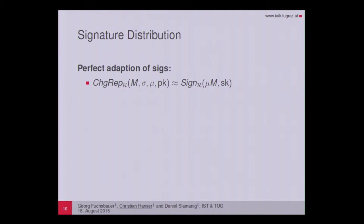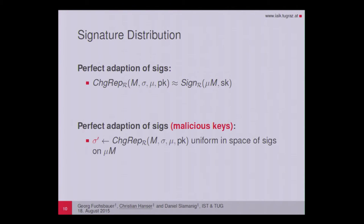We need some properties during this talk for the signature distribution that are stronger than class hiding. The first is perfect adaption of signatures, which demands that an adapted signature has the same distribution as a freshly issued signature. An even stronger notion is perfect adaption under malicious keys, where we require that the signature output by the change-rep algorithm is a uniform element in the space of signatures on the updated representative under the same public key.